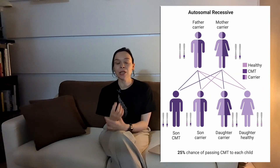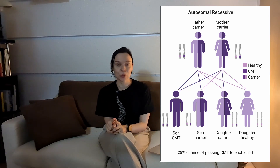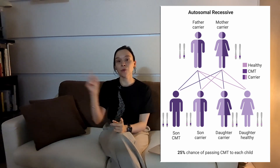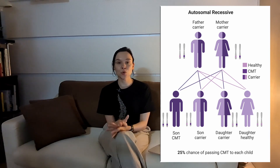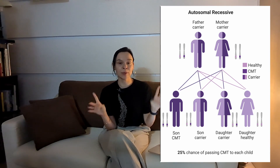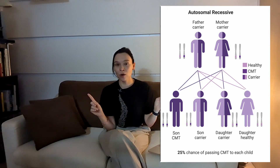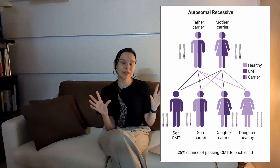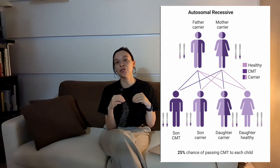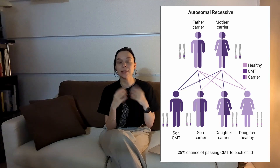On the other hand, CMT type 4 is known for its autosomal recessive type of inheritance. Here, the disease is caused by a mutation in both copies of the gene, so the faulty copy of the gene must come from both parents — from the mother and from the father. Here it makes sense to talk about carriers. Both mother and father have a faulty copy of the gene, but only one, so they do not have the symptoms. But there is a 25% chance that they will pass on this faulty gene — both of them — to their child, again irrespective of the sex of the child.